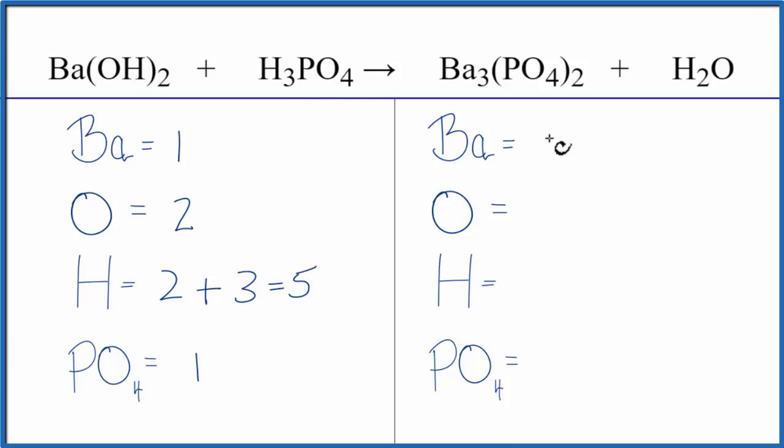On the product side we have three bariums, we have one oxygen, two hydrogens, and then two times the one PO₄, so we have two PO₄s. So this simplifies things because we don't have all these oxygens here. We just included this in one package.